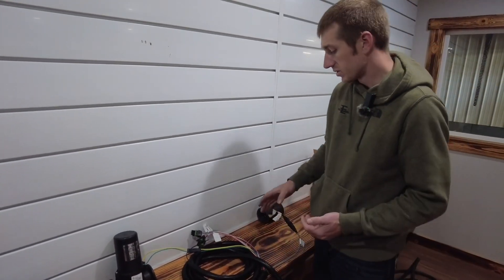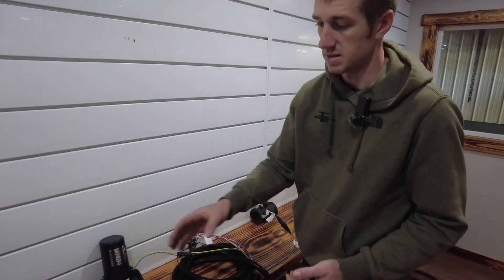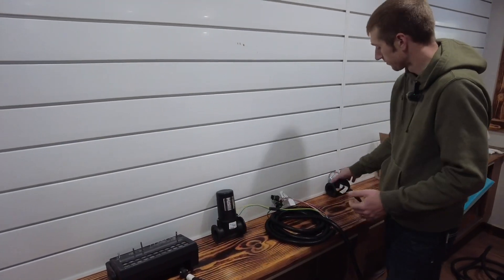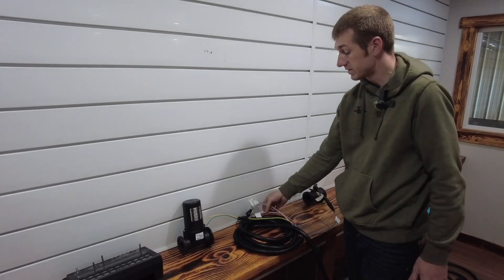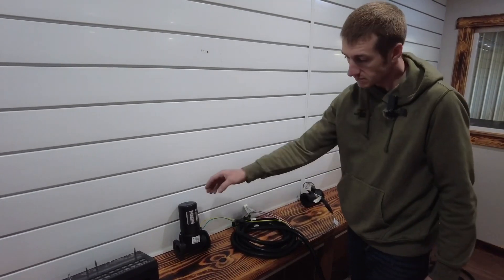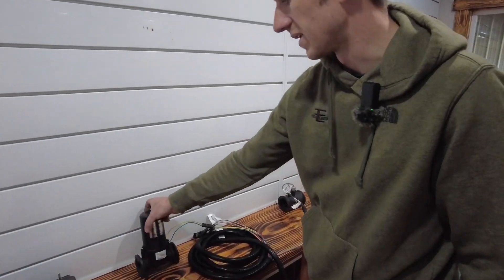So those are the components when we run through this and some things to remember on the controller. We've got the flow meter. The only thing really missing, I guess, would be your section valves if you have section valves of any sort. And then this is just the butterfly flow meter.